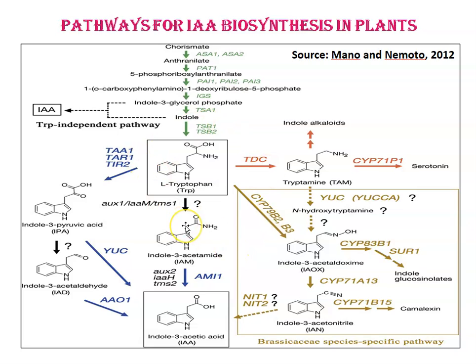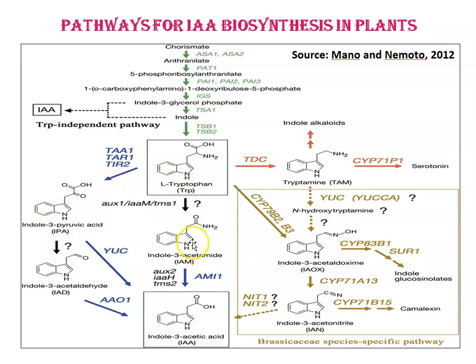To summarize all pathways for IAA biosynthesis in plants: first is the synthesis of tryptophan itself; then the tryptophan-independent pathway; and the tryptophan-dependent pathways include the IPA pathway, the IAM pathway, the IAOX pathway, and the TAM pathway.